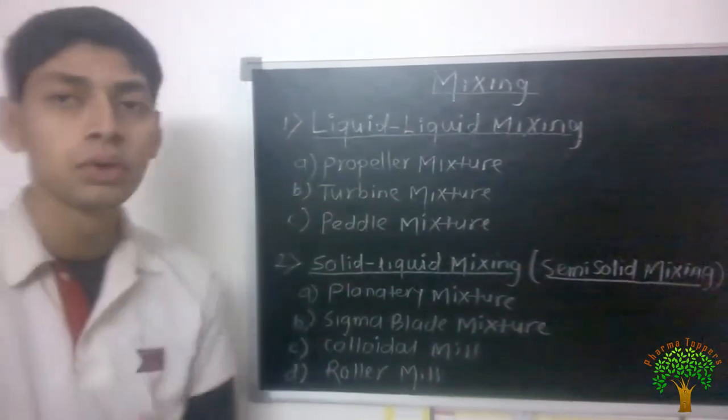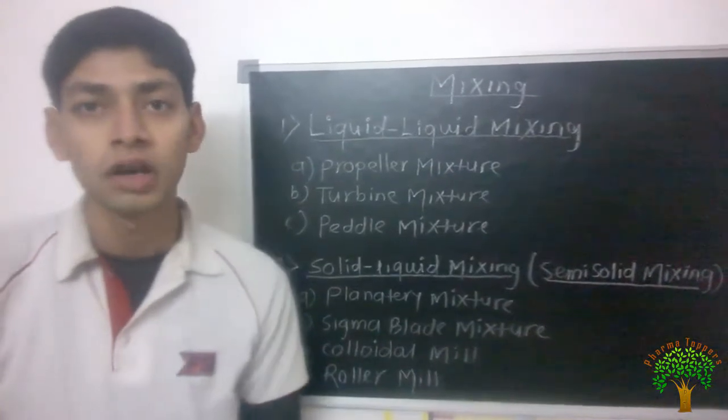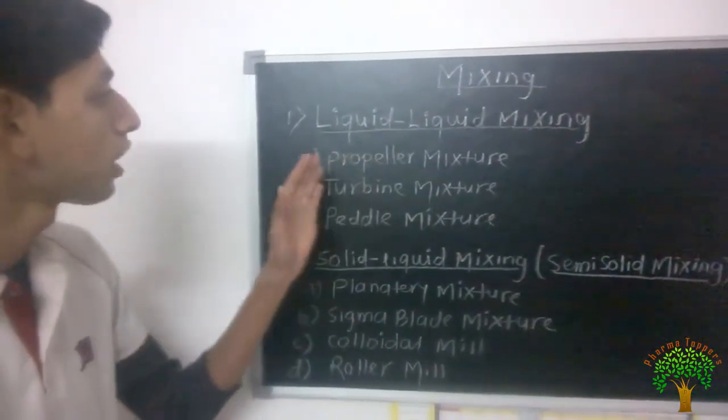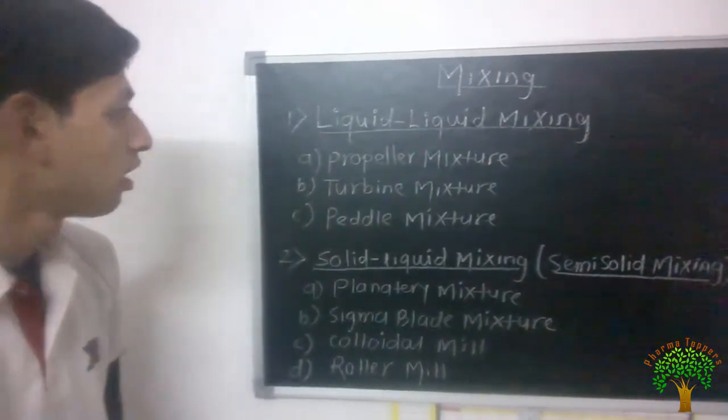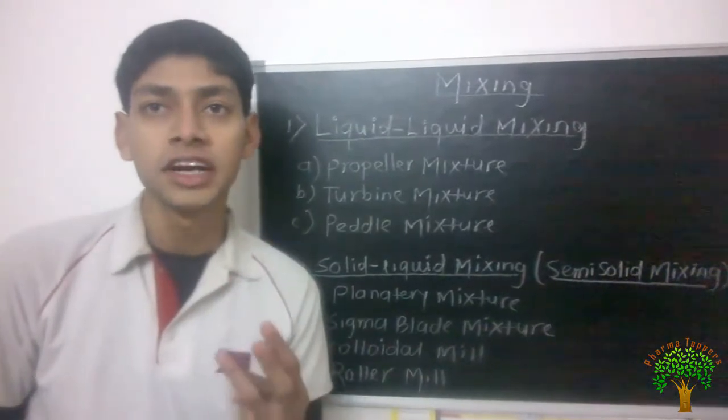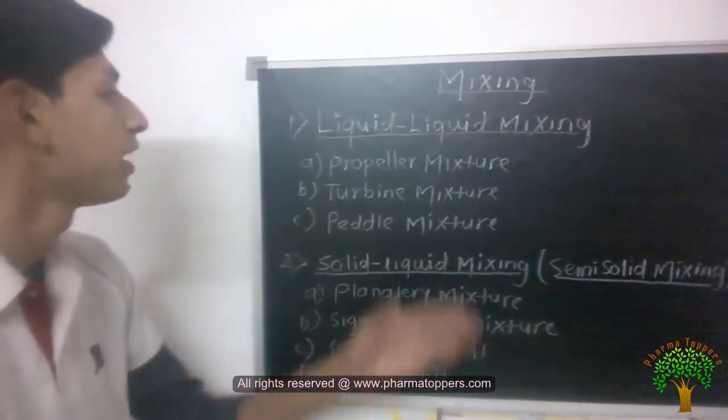Now first of all we are going to discuss mixing process by type, like liquid mixing, solid mixing, as well as semi-solid mixing. Now first of all we are moving towards liquid mixing. Liquid mixing includes three types of mixers: first one is propeller mixture, turbine mixture, as well as the paddle mixture.